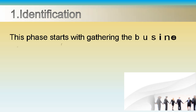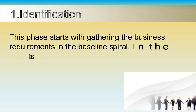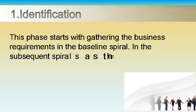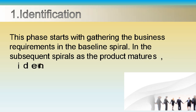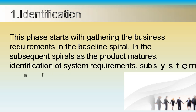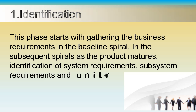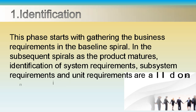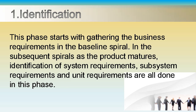Identification. This phase starts with gathering the business requirements in the baseline spiral, and in subsequent spirals as the product matures. Identification of system requirements, subsystem requirements, and unit requirements are all done in this phase.